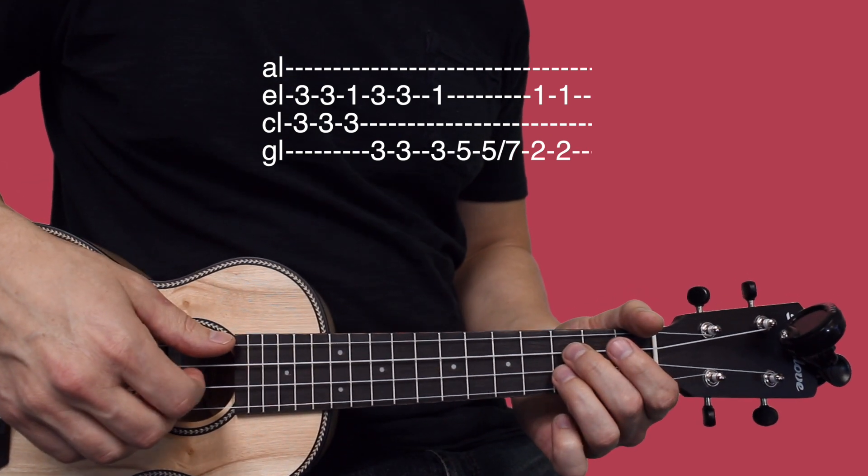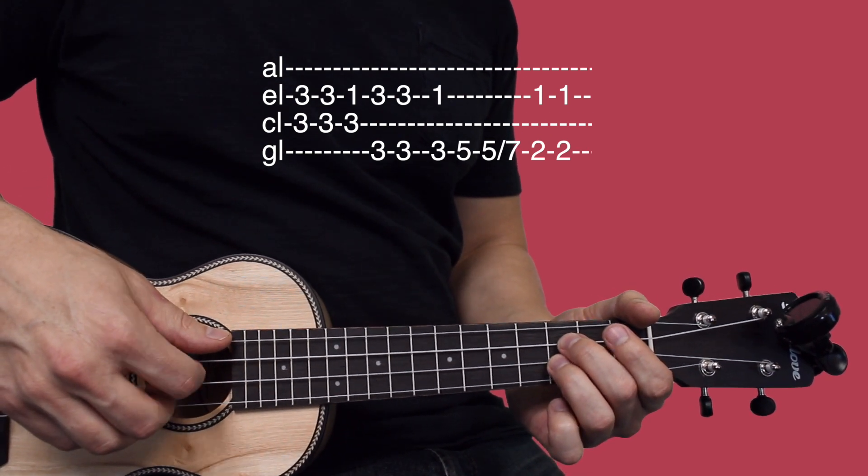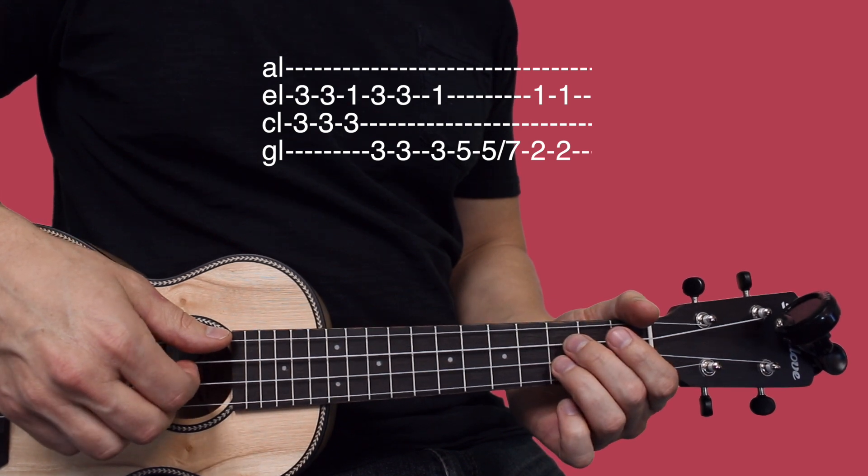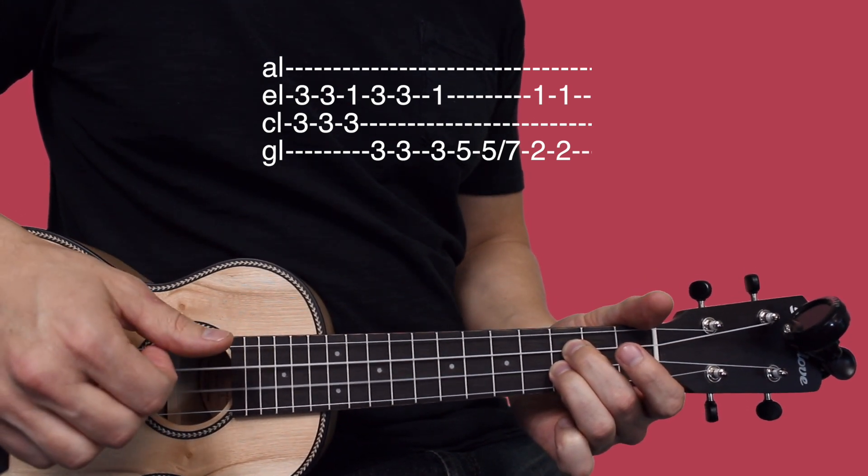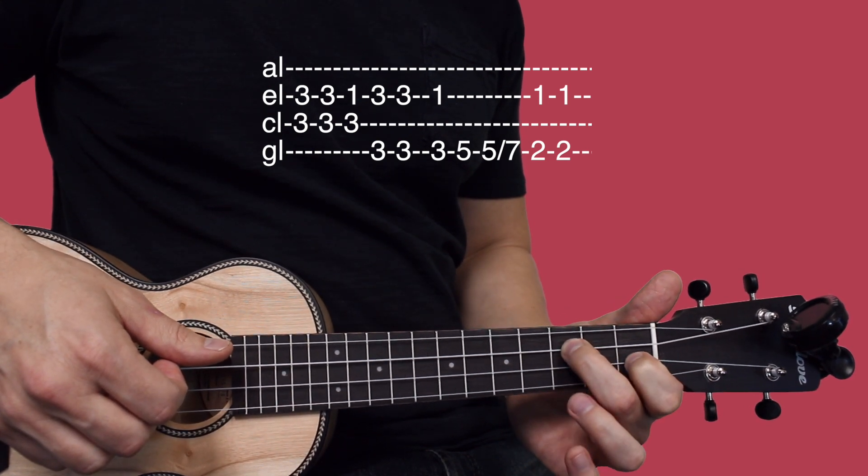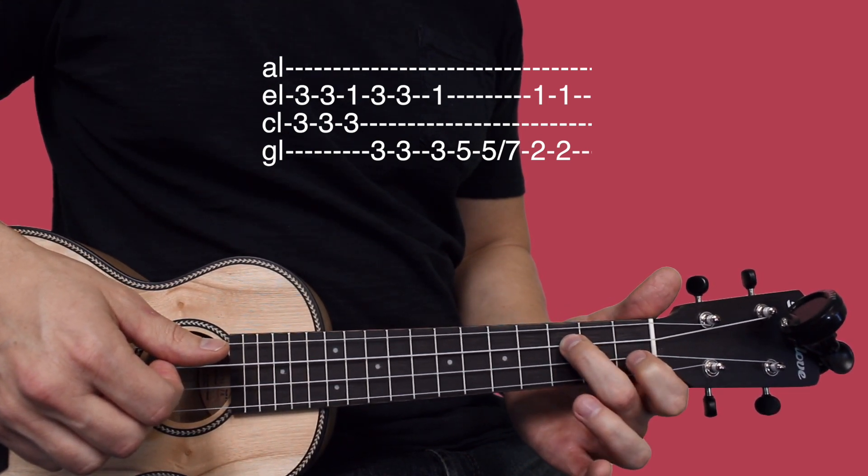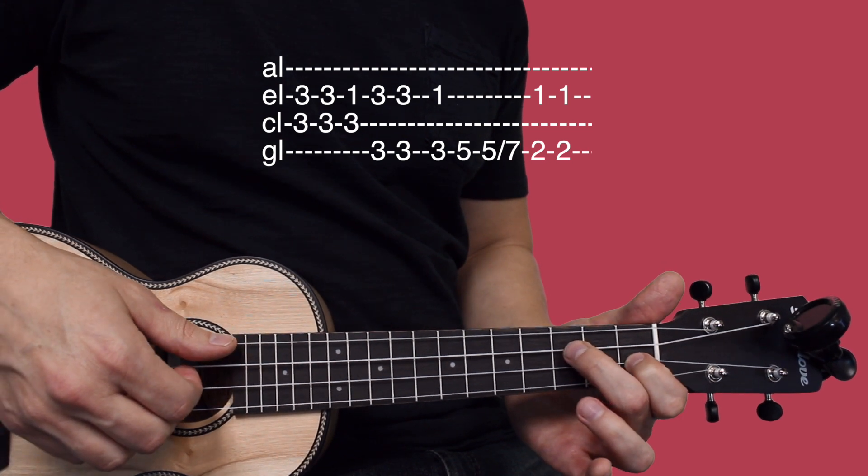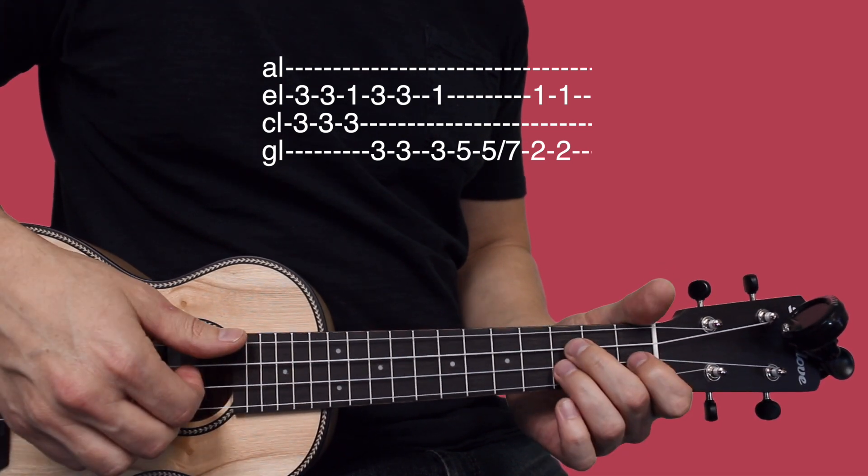So what you're going to do is take your index and middle finger and pluck those strings twice. Then you're going to set your index finger back here, ring finger comes off, and index finger comes back to the first fret of the second string.